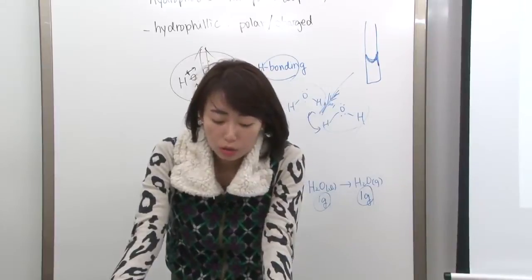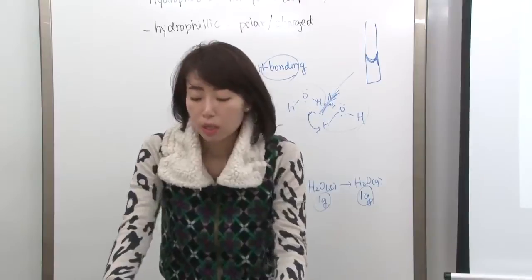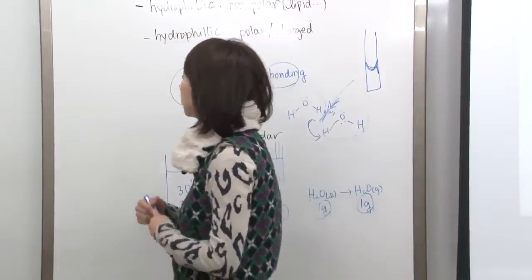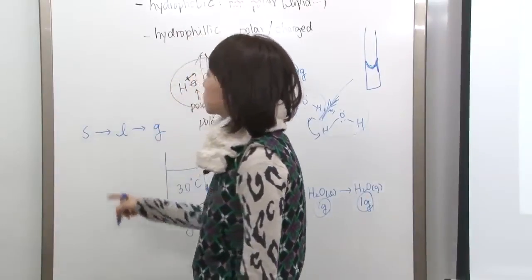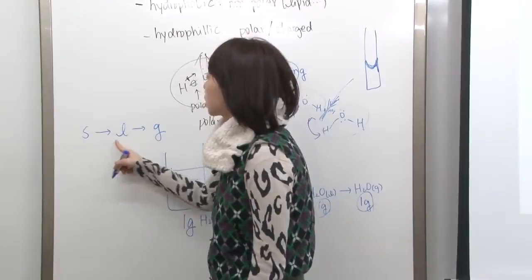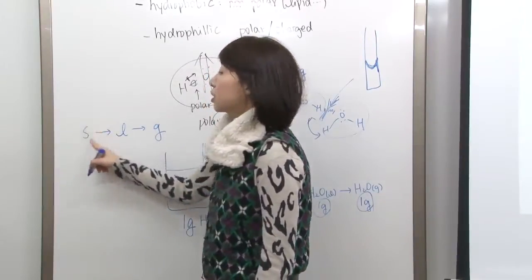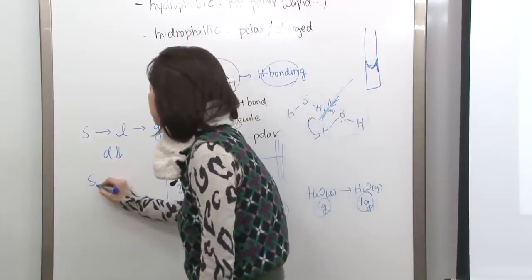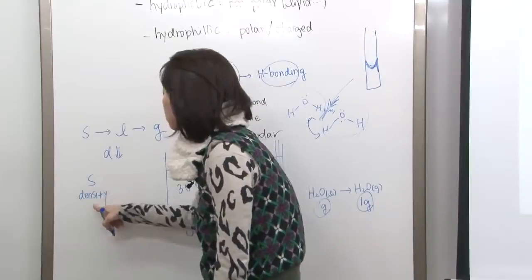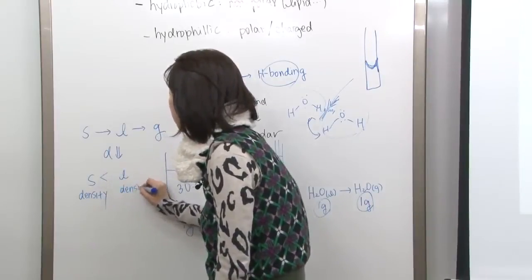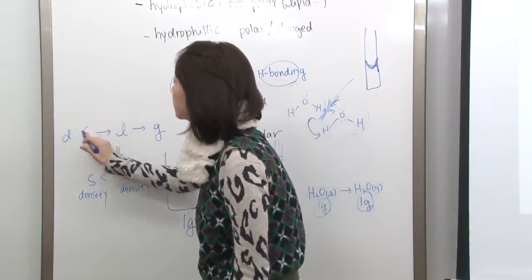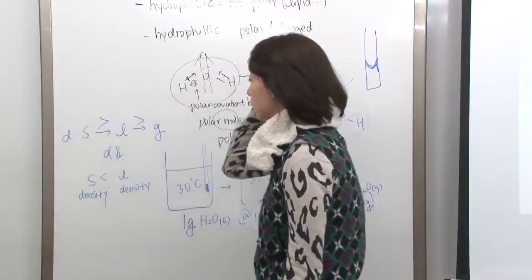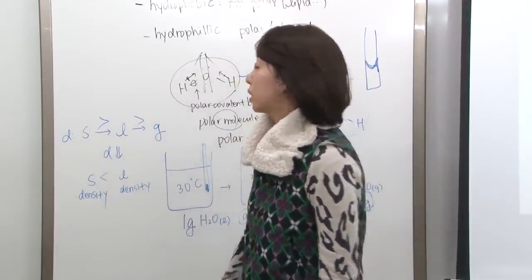Number five: water exhibits strong cohesion-tension. Number six: ice floats because it is less dense than liquid water. Normally, going from solid to liquid to gas, molecules become farther apart and density decreases. But in the case of water, solid density is actually less than liquid density — the opposite of the normal trend.